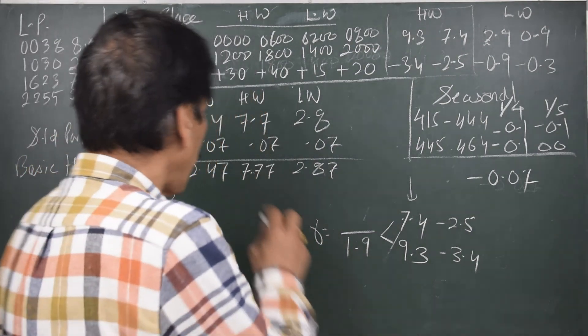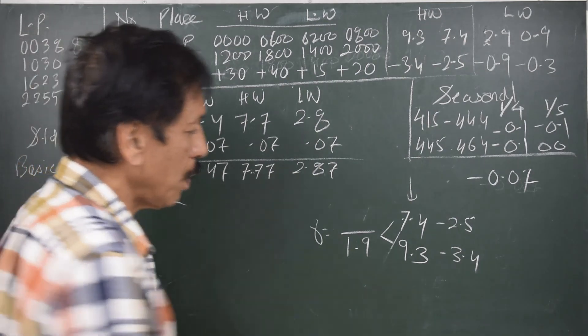Now we want to find out the height difference for 7.77. We get minus 2.67. That is the correction.